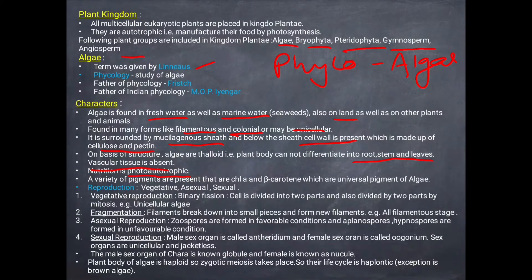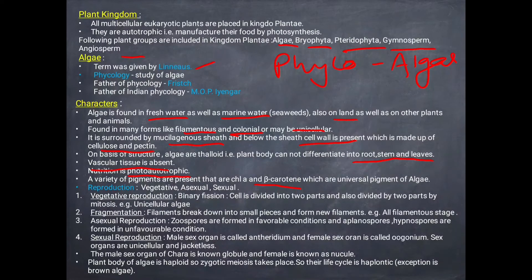There are various pigments in algae, and the universal pigments of algae are chlorophyll A and beta-carotene. These are found in each type of algae.